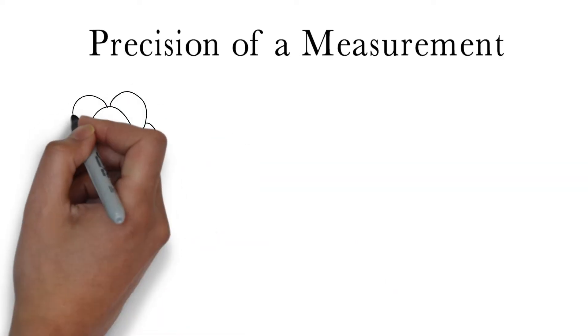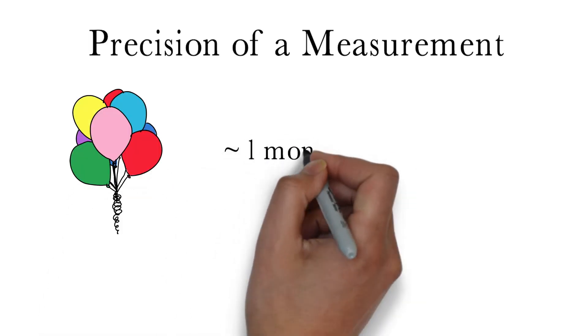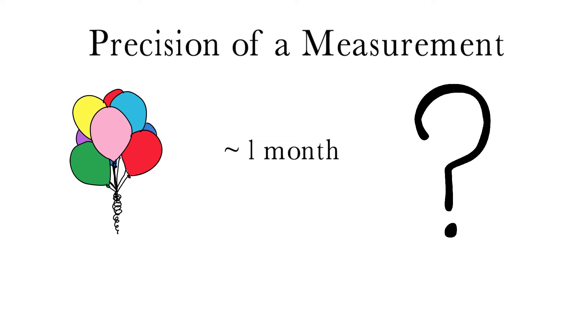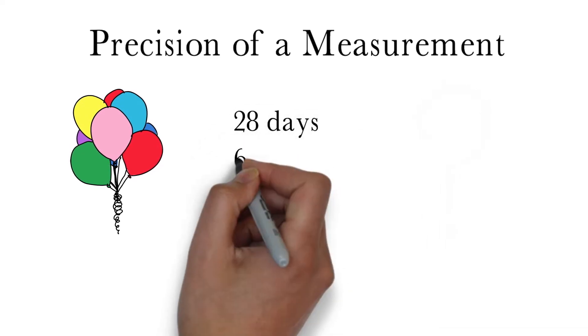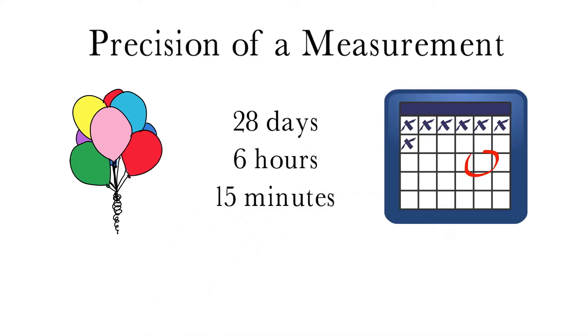Imagine someone asked you when your birthday was. If you told them it was in about one month, could they determine exactly what day it was on? What if you told this person instead that your birthday was in 28 days, 6 hours and 15 minutes? This second response is much more certain and the person has enough information to pick the exact day of your birthday.